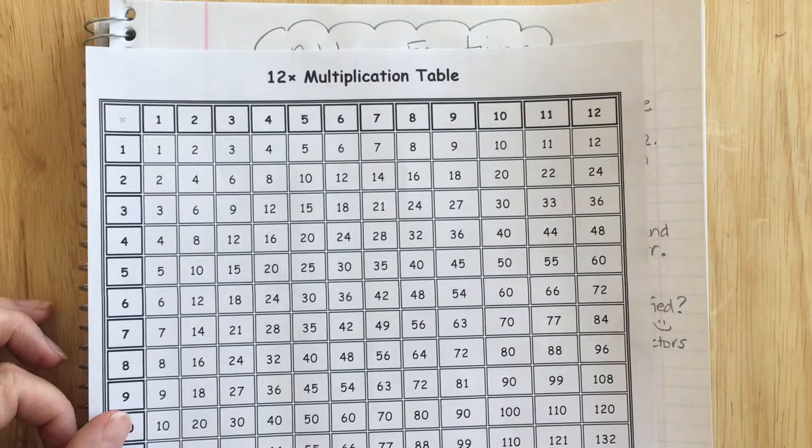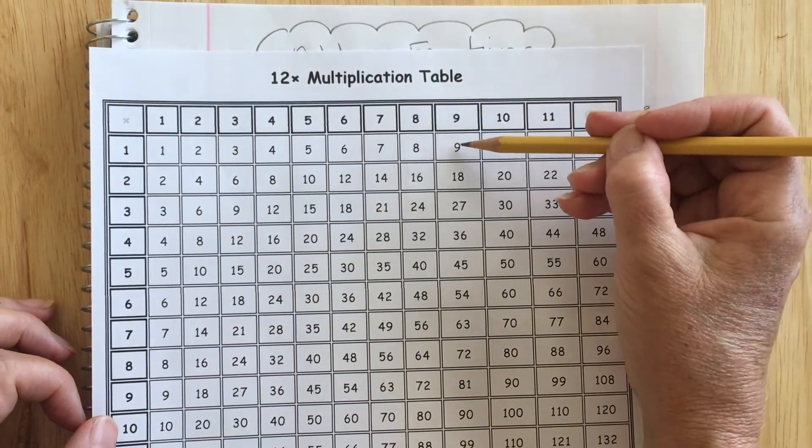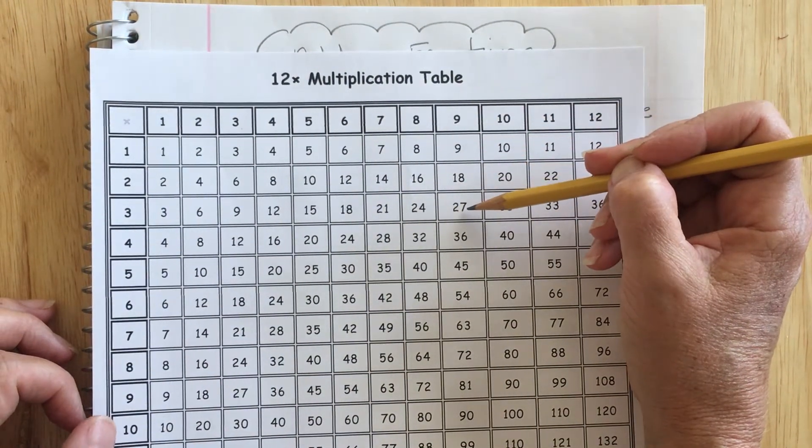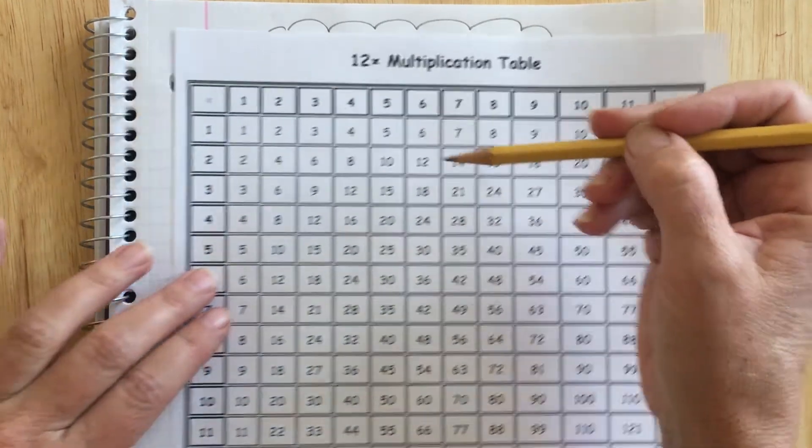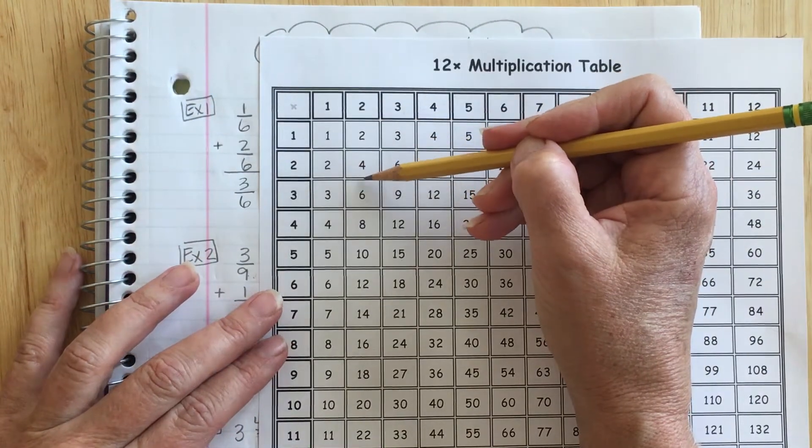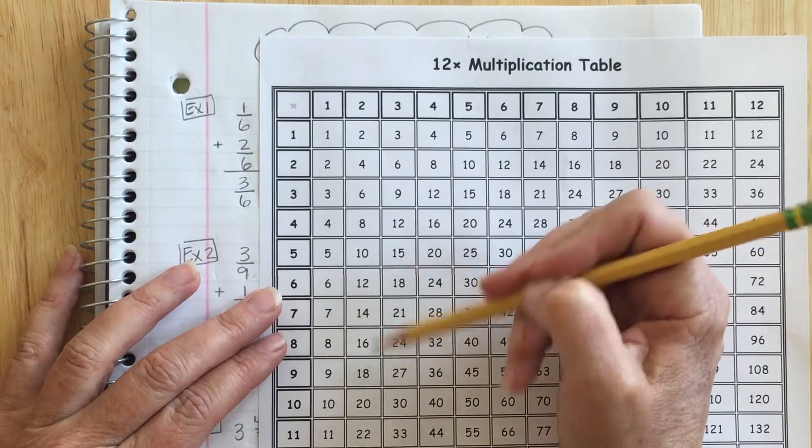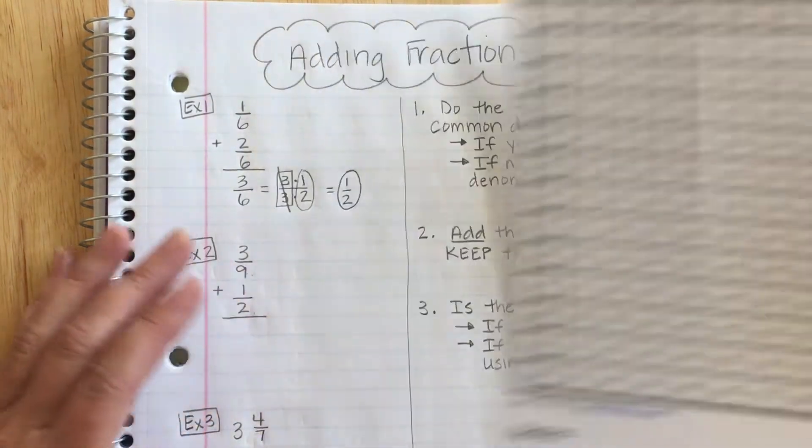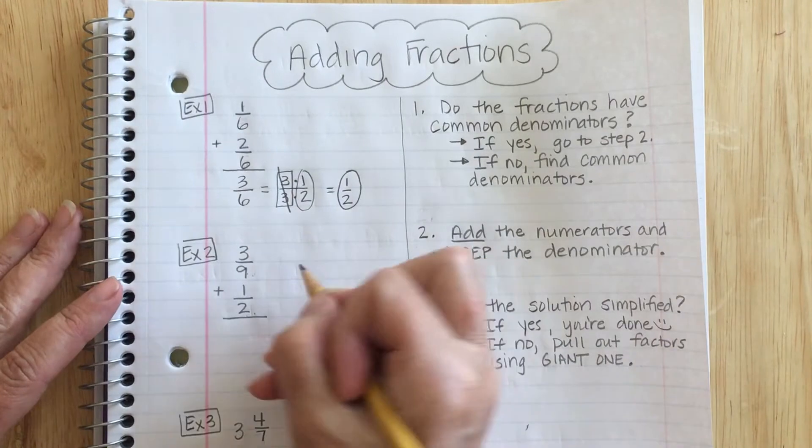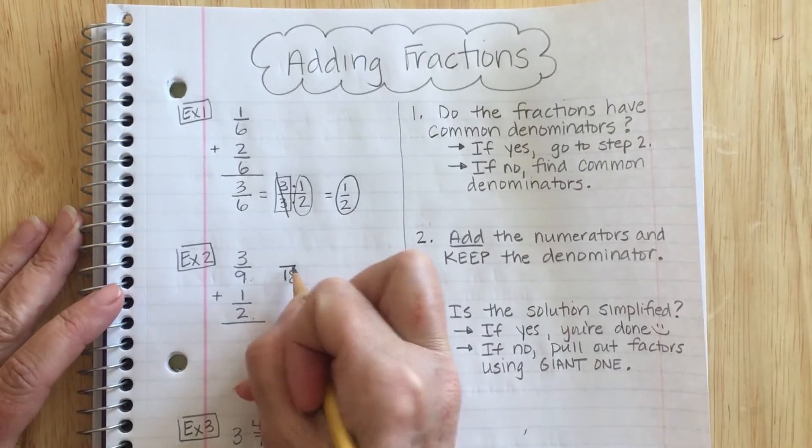So I'm going to take a look at my chart. I'm going to look at my nines first. I've got 9, 18, 27. So now I'm going to look at my twos. I'm looking for a 9 or an 18 or a 27. Oh, there's an 18. So 2 does go into 18. And so does 9. So 18 is going to be my least common multiple.